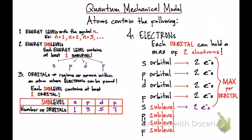A D sublevel has five orbitals — multiply by two electrons and you get ten. So a D sublevel can hold a maximum of ten electrons. An F sublevel has seven orbitals — multiply by two electrons and you get 14 electrons for an F sublevel.